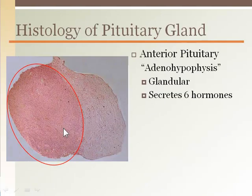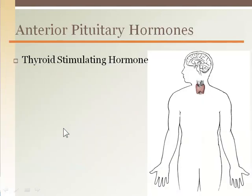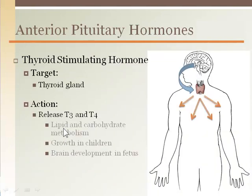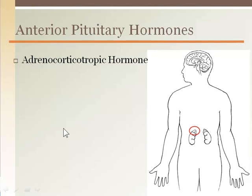Now let's look at the hormones from the anterior pituitary gland. Thyroid stimulating hormone is released by the anterior pituitary gland and targets only the thyroid gland, causing it to release thyroid hormones T3 and T4, which increase metabolism. The stimulus sequence begins with the hypothalamus detecting low metabolism, then sending out thyrotropin releasing hormone to the anterior pituitary, which then sends out thyroid stimulating hormone to travel through the blood and act on the thyroid gland.